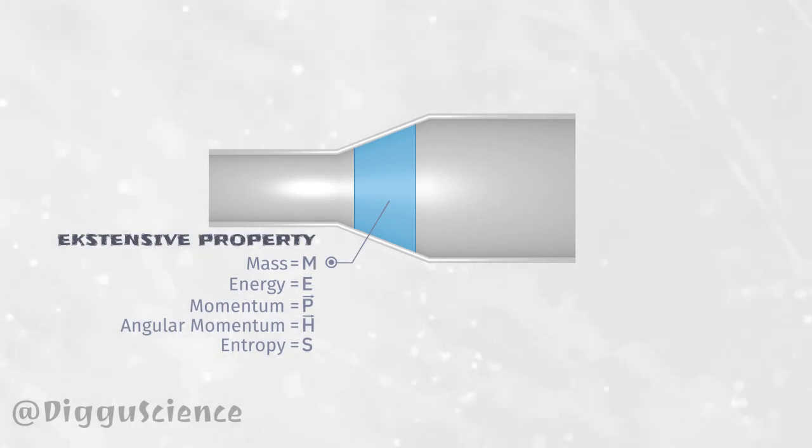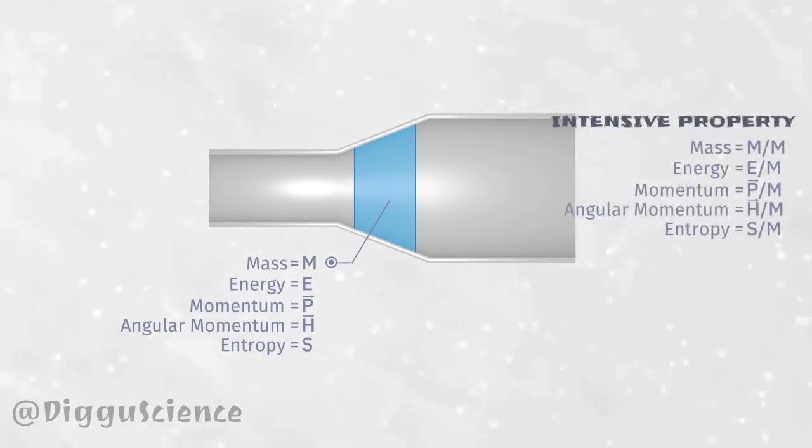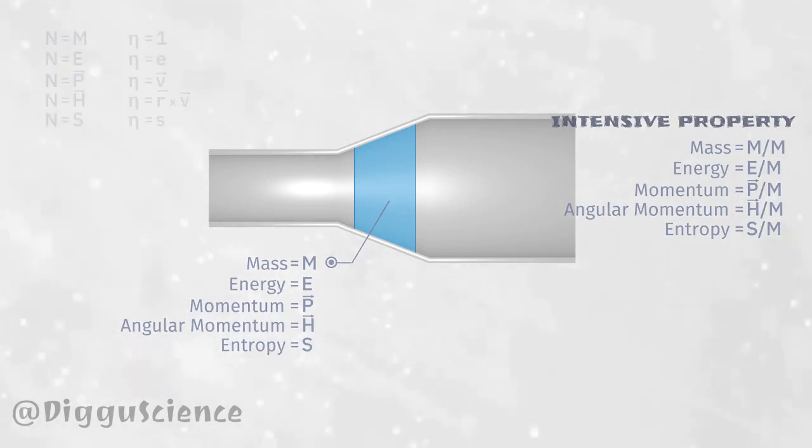Extensive properties can be transformed into intensive properties by dividing the extensive property by mass. Thus the unit becomes per unit mass. To simplify writing, let's assume the extensive property is N and the intensive property is eta.